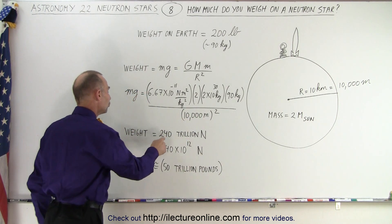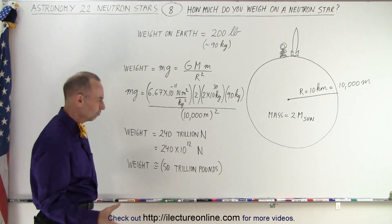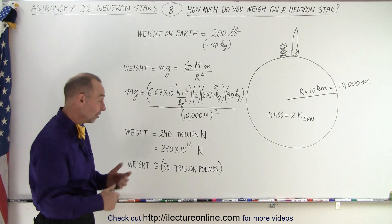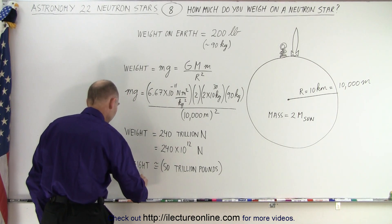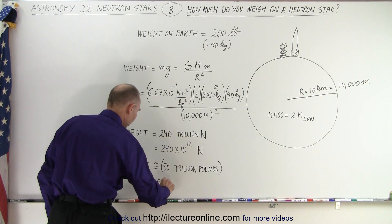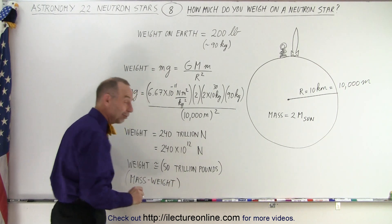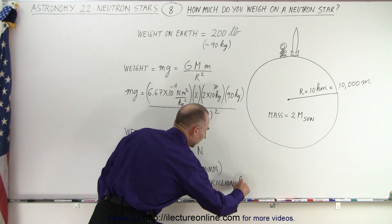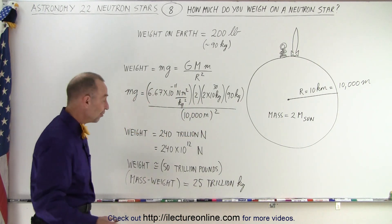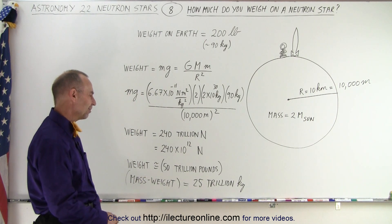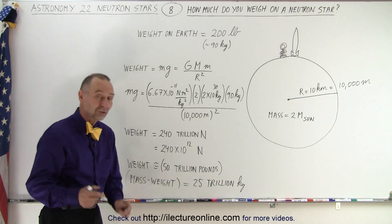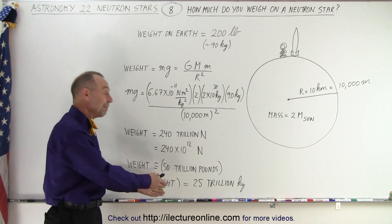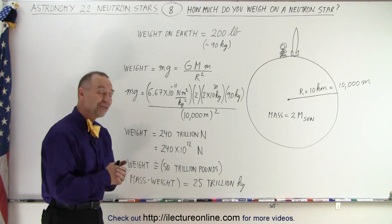...that gives you an enormous weight of 240 trillion newtons — that's 240 times 10 to the 12 newtons — which is about 50 trillion pounds. And if you want the mass-weight equivalent in units of kilograms — kilograms being a unit of mass — that would be an equivalent of about 25 trillion kilograms. So you would have a weight as if you had a mass of 25 trillion kilograms. You don't have that much mass, but you would be attracted to the surface by these enormous gravitational forces, with the same forces acting on you as if you had a weight of 50 trillion pounds.